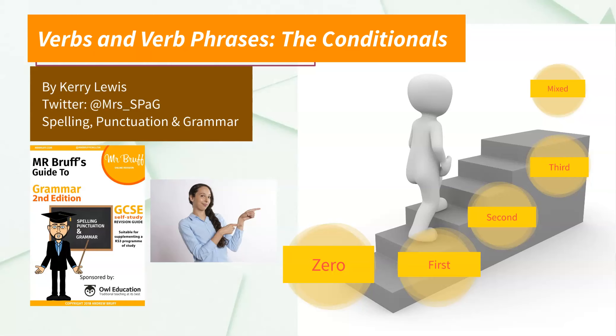Hello, my name's Kerry Lewis and I'm a member of the MrBruff.com writing team. Today I'm going to talk about conditional sentences. In the English language, there are five different ways to talk about things that might or might not happen, either in the present, past or future.